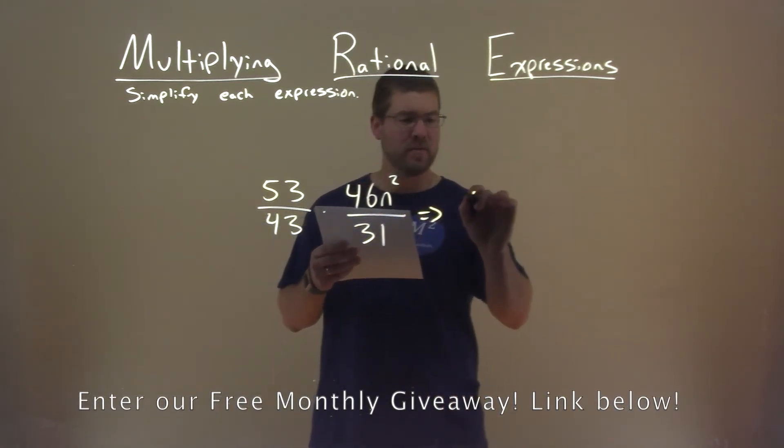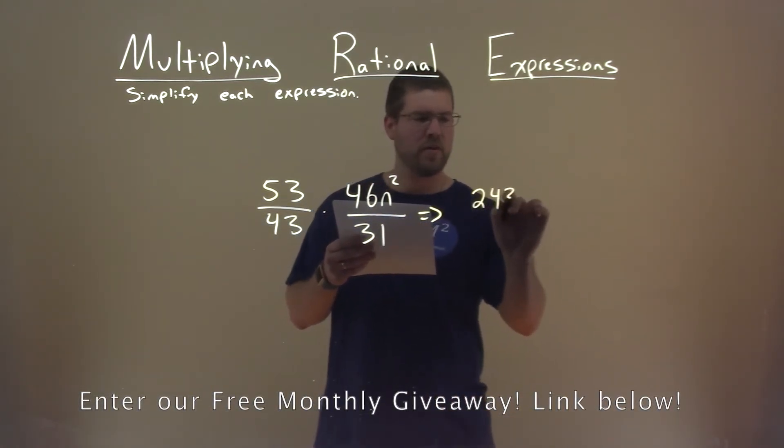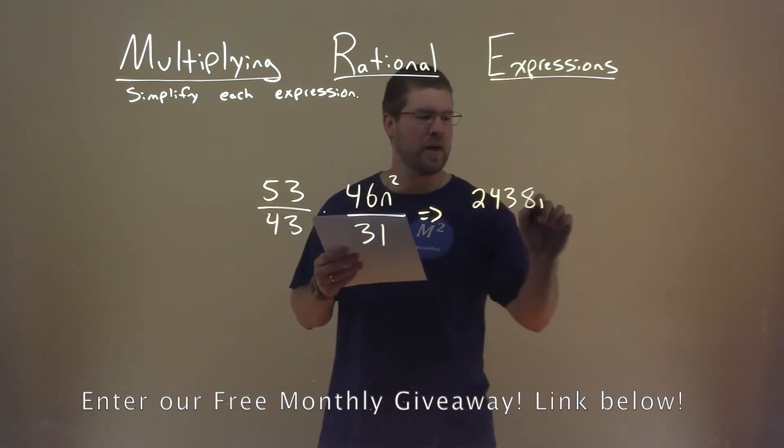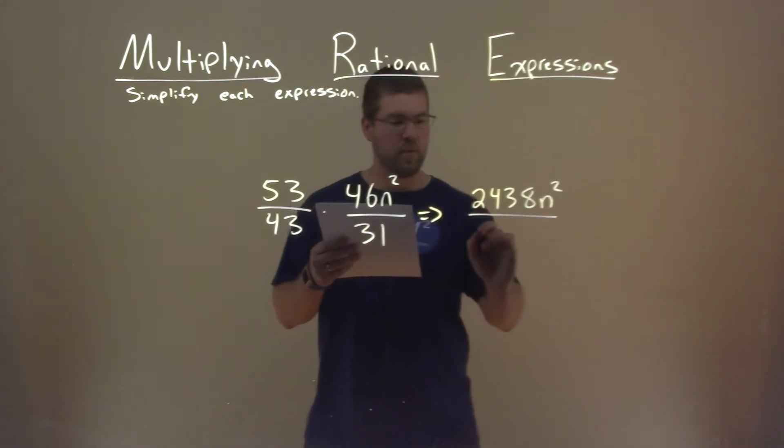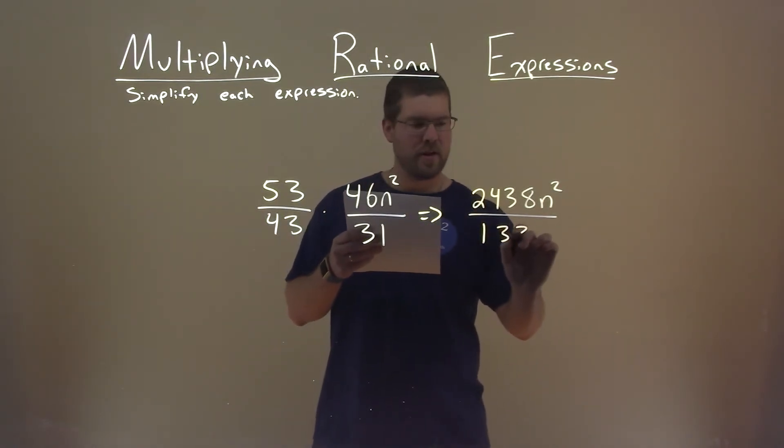53 times 46 is 2,438. Don't forget the n squared. All over 43 times 31, 1,333.